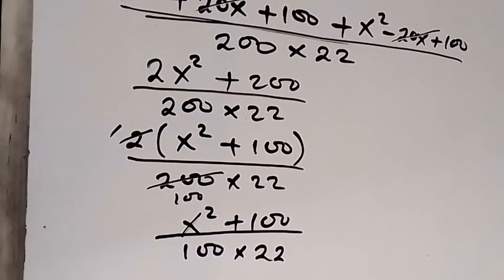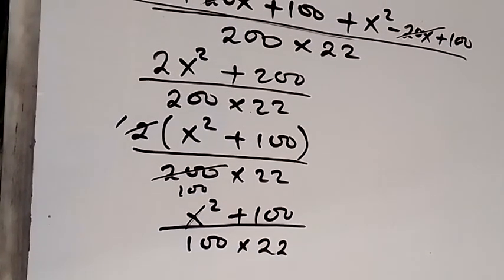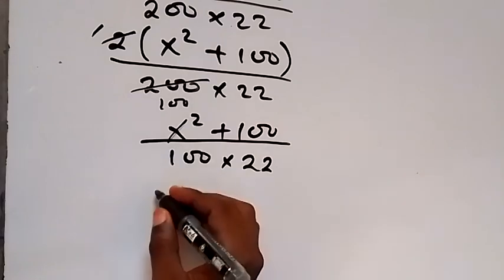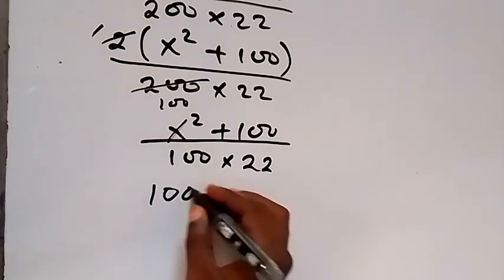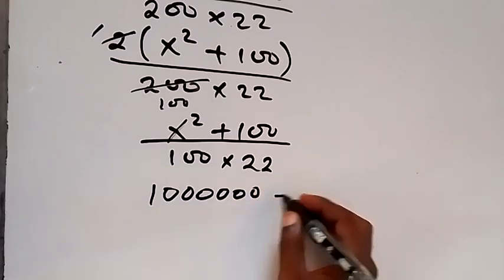And also from here, we don't forget that the value of x we represented x with 1000. So we can replace x with, we have 1000 squared and that will be 1 million, that's six zeros, then plus 100.